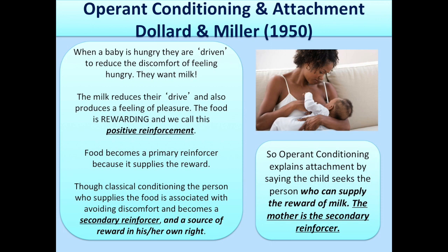Applying operant conditioning to attachment involves drive reduction theory. When a baby is hungry, they are driven to reduce the discomfort of feeling hungry, so they cry. When they get the milk, it reduces their drive and produces pleasure — food is rewarding, and we call this positive reinforcement, making food a primary reinforcer. Through classical conditioning, the person who supplies the food is associated with avoiding discomfort and becomes a secondary reinforcer. So operant conditioning explains attachment by saying the child seeks the person who supplies the reward of milk — the mother is the secondary reinforcer and so attachment occurs.